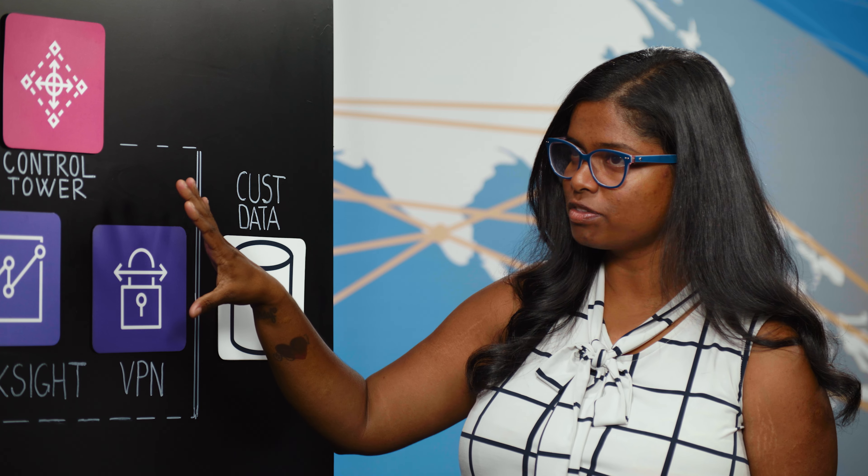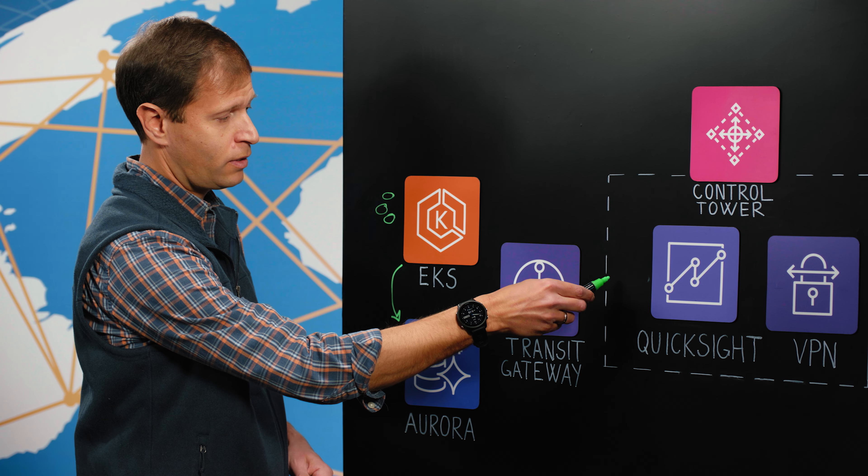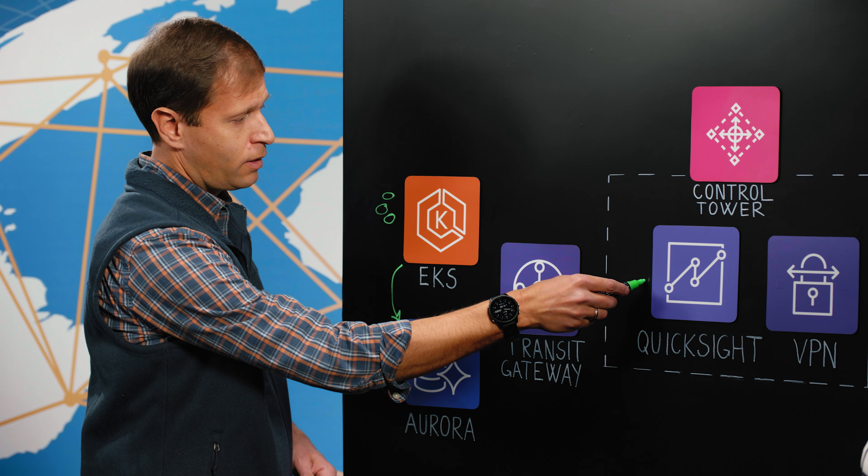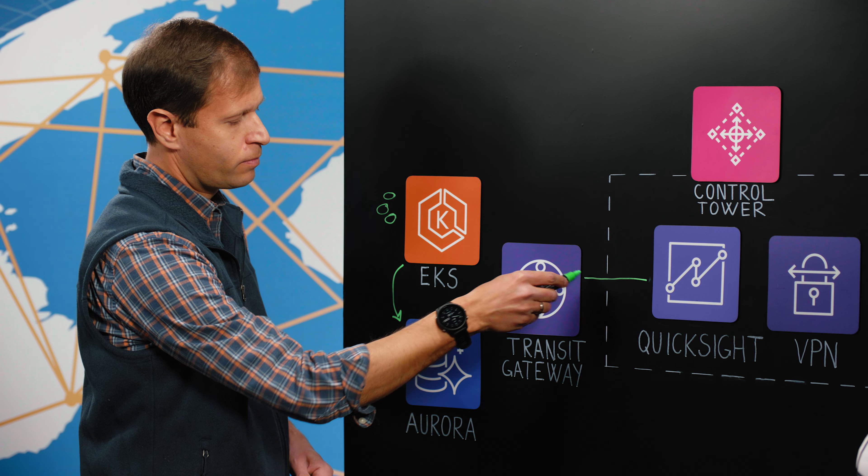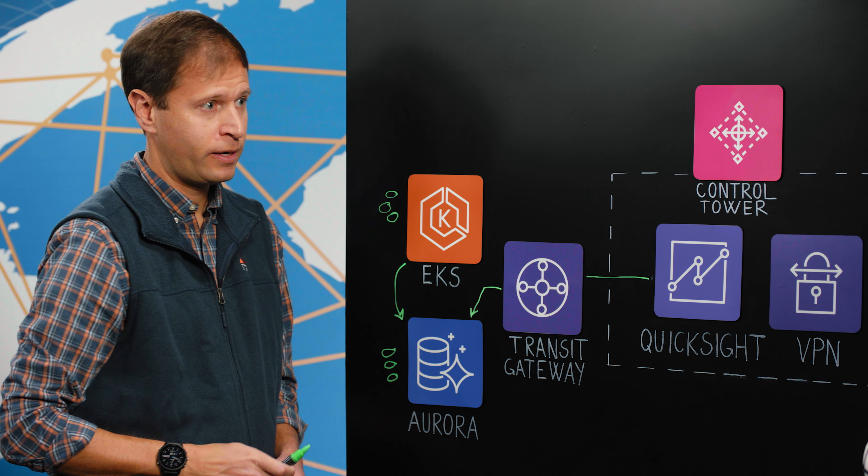How does your QuickSight now get data from the actual Postgres database that customers can consume? Right, so we would peer the VPC, the QuickSight would be using with Transit Gateway and then Transit Gateway would talk to Postgres Aurora to connect to the data source.